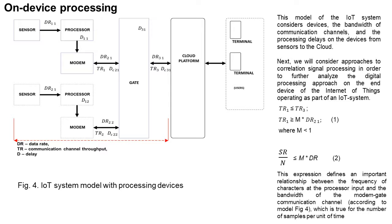Consider the model of an IoT system from the point of view of basic devices that transmit, receive, and process data, as well as key characteristics. It is assumed that all data processing is carried out in digital, non-analog form — that is, even when transmitting data from a sensor to the processor, we operate with data samples. The sensor, processor, and modem form a device module. Let us define key parameters related to data transmission.